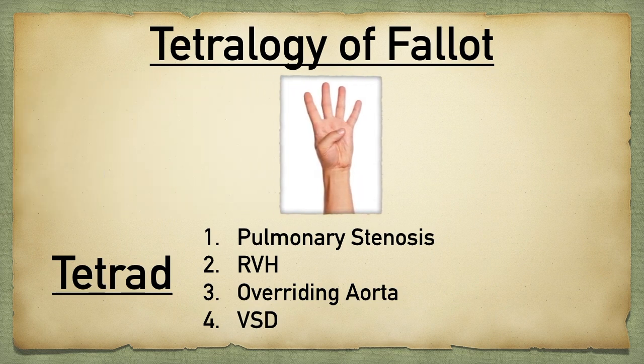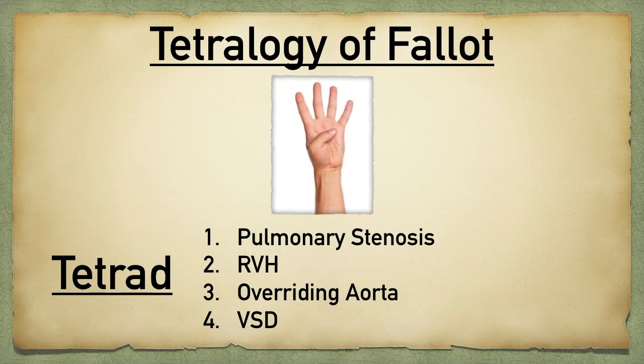Number four: tetralogy of Fallot. This is a tetrad consisting of pulmonary stenosis, right ventricular hypertrophy, overriding aorta, and ventricular septal defect.